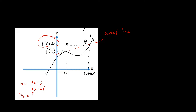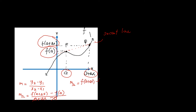The slope of the secant line equals f of a plus delta x minus f of a, over x₂ minus x₁, which is a plus delta x minus a. The a's cancel out, leaving delta x in the denominator. So the slope of the secant line simplifies to f of a plus delta x minus f of a over delta x.